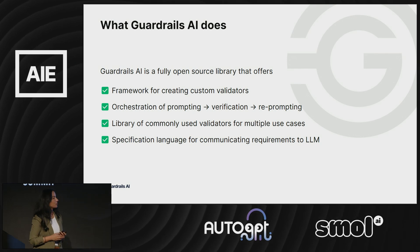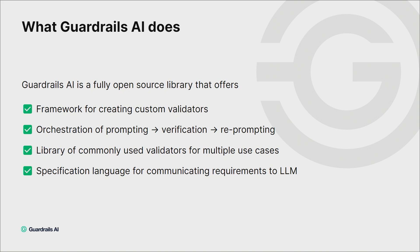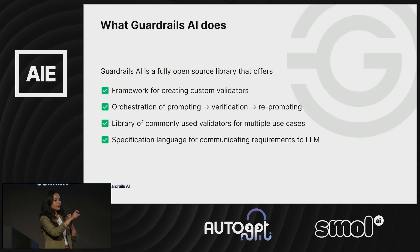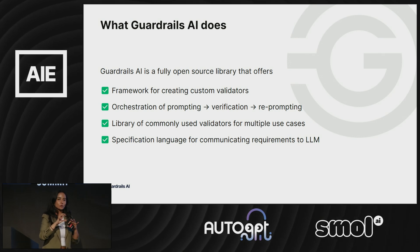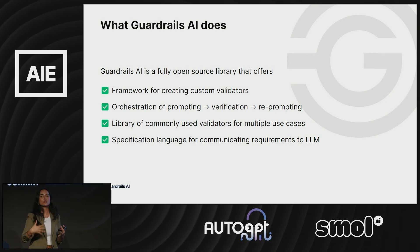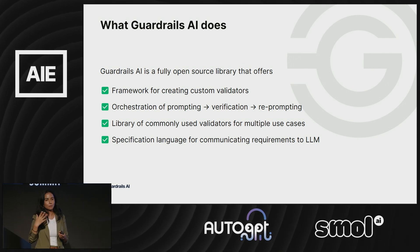Within this framework, Guardrails.ai is a fully open-source library that allows you to create custom validators, orchestrates the whole validation and verification process to make sure it's done as efficiently as possible, provides a library and catalog of many commonly used validators across a bunch of use cases, and is a specification language that allows you to compile your requirements into a prompt so that whatever specific validators you want to use are automatically turned into a prompt, ensuring those requirements are also communicated to the LLM.